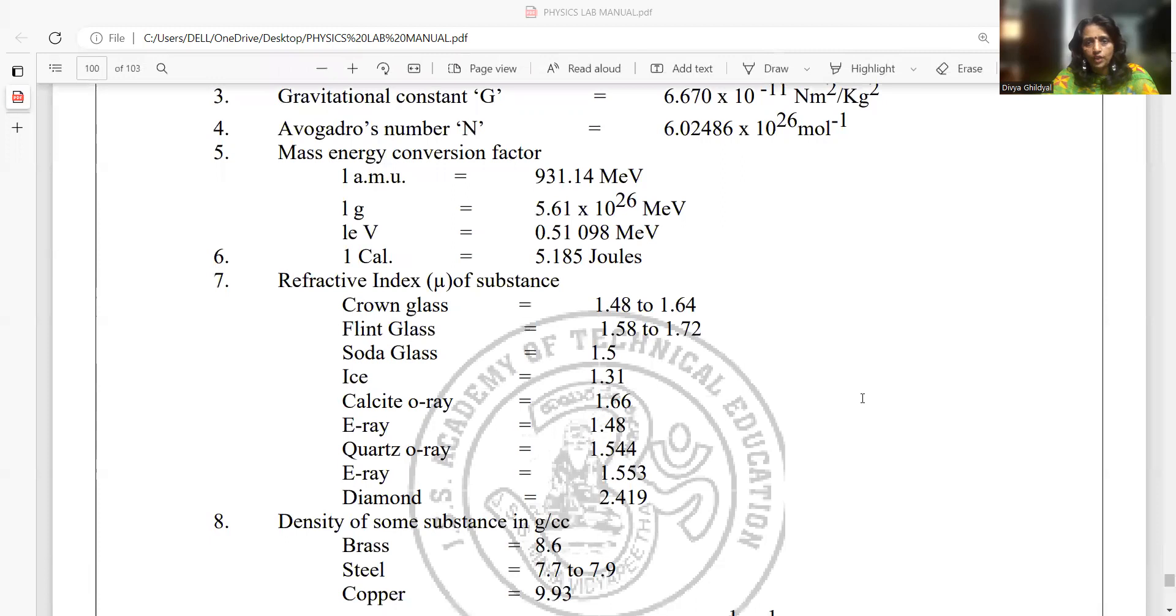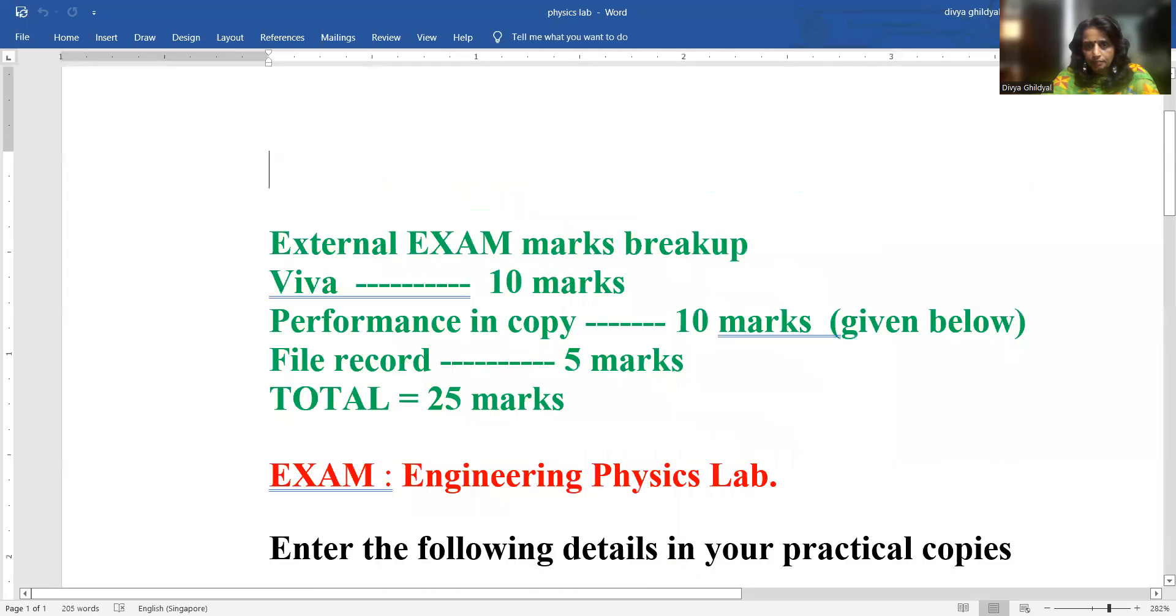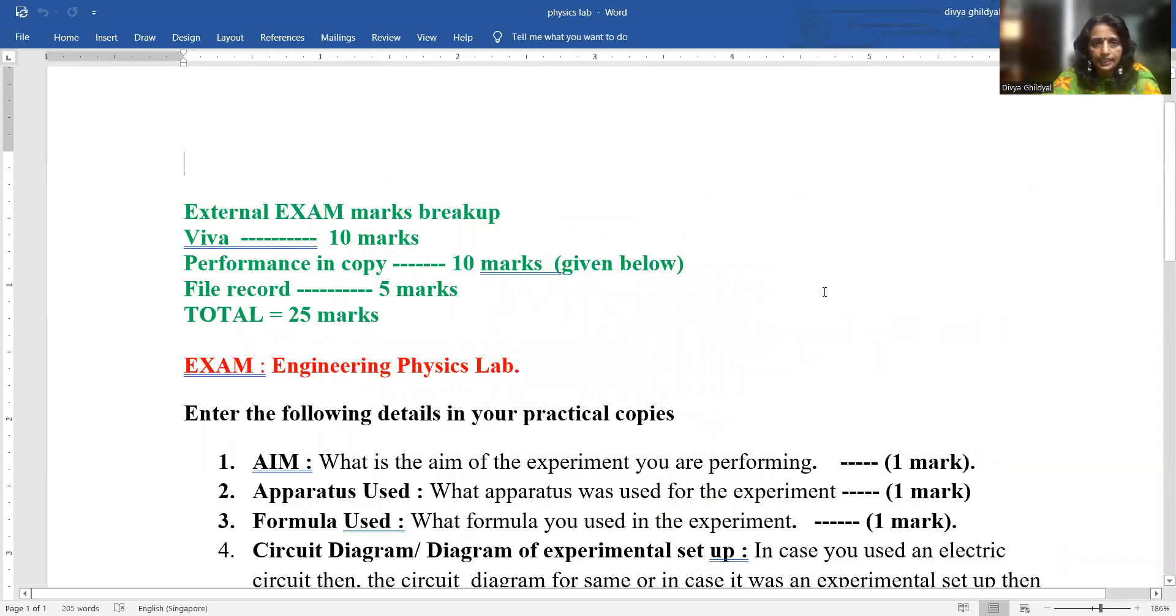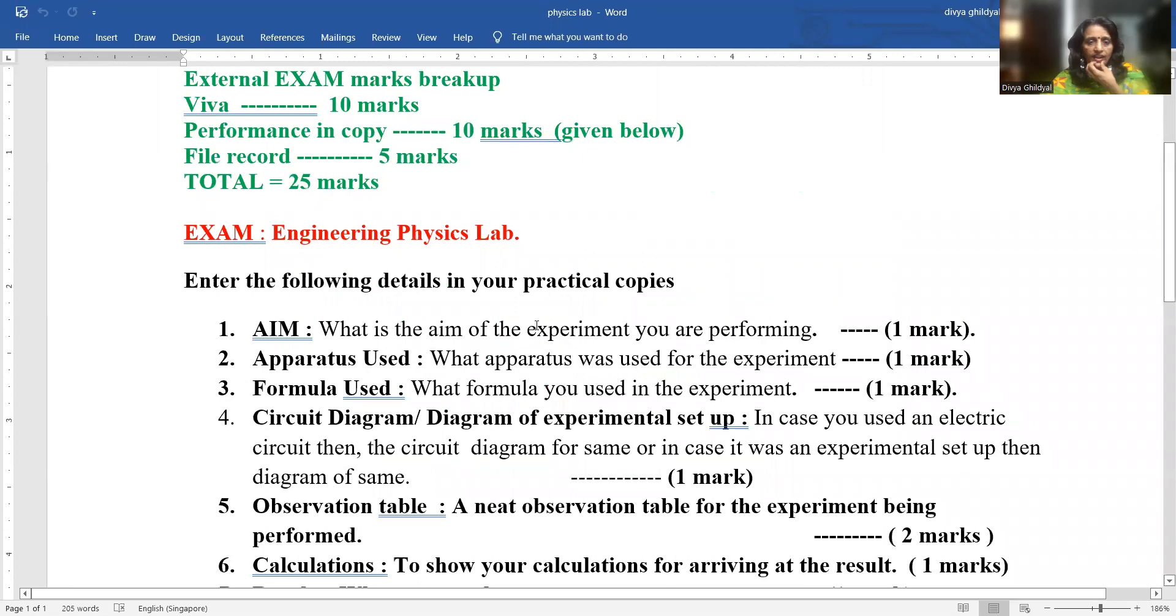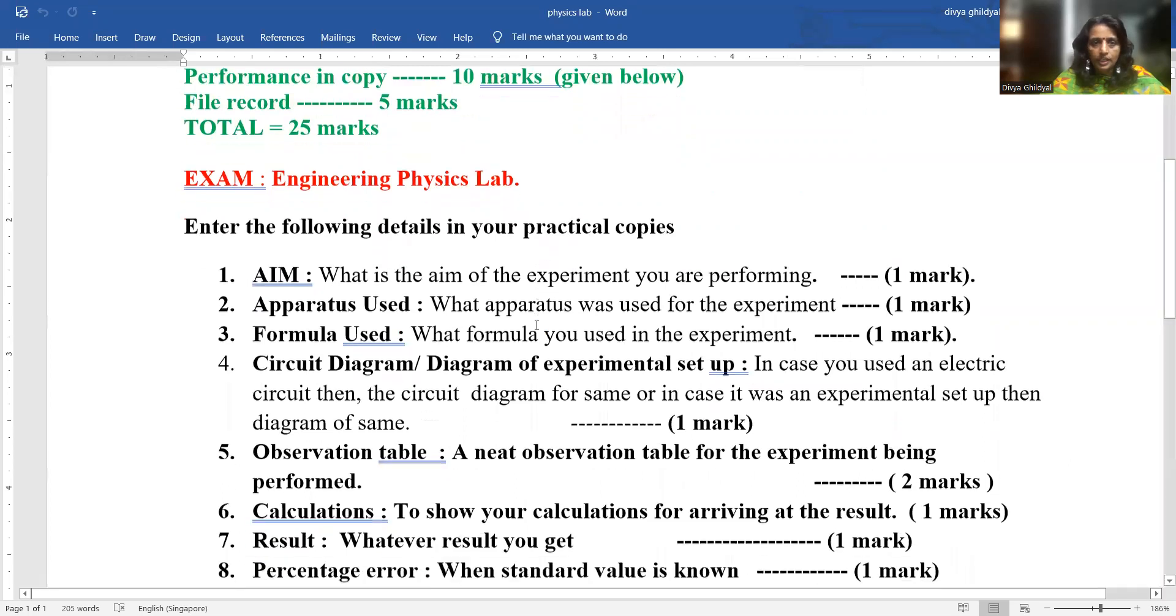Now, what have I got to write in my practical copy is something very important and I should be knowing what all is to be mentioned in my physics practical final copy. My external exams which I will be giving will be carrying 25 marks, in which my viva will be of 10 marks, my copy performance will carry 10 marks and my file record will carry 5 marks. When or what all, I will try to take that experiment of which copy I can fill properly because my copy is going to carry marks for the university.